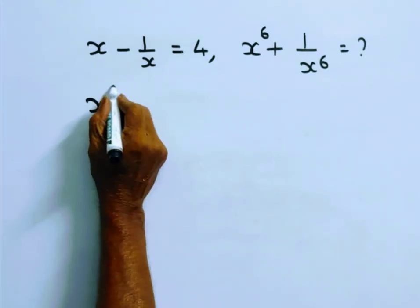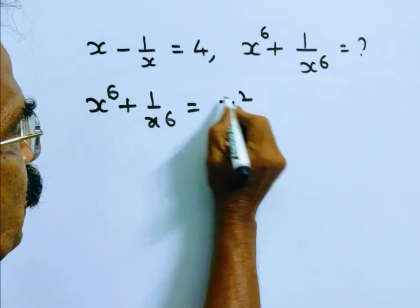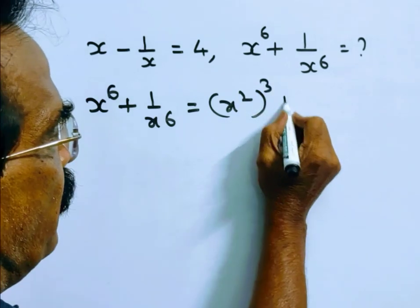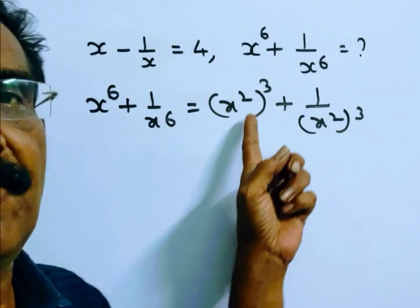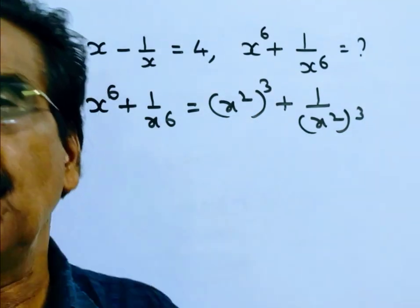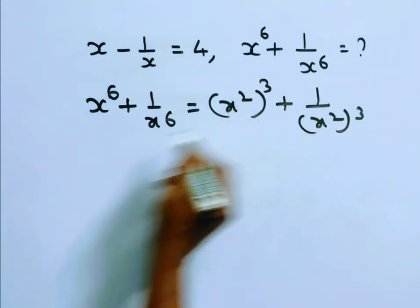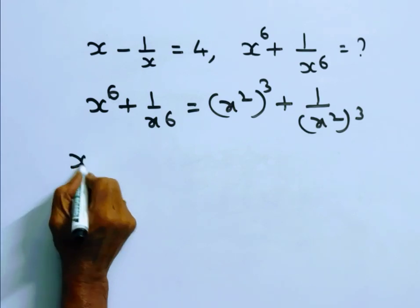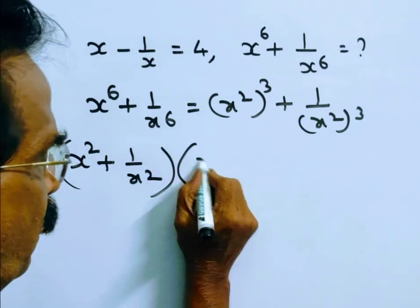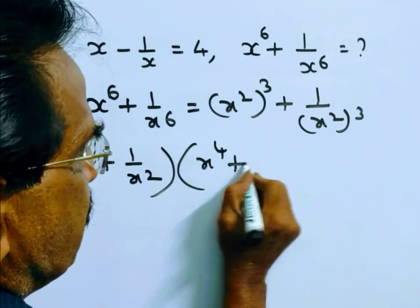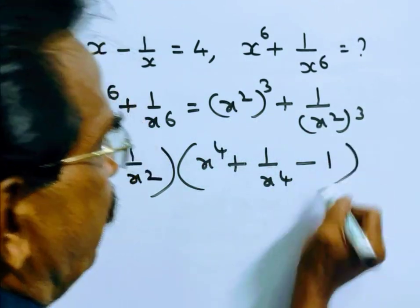x power 6 plus 1 by x power 6 is equal to (x squared) whole cube plus (1 by x squared) whole cube. This is in the form of a cube plus b cube. a cube plus b cube is equal to a plus b into a squared plus b squared minus ab. So the factors are: (a plus b) into (a squared plus b squared minus ab), where ab means x squared into 1 by x squared, which equals 1.